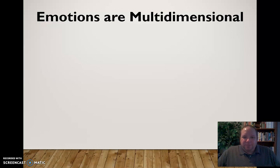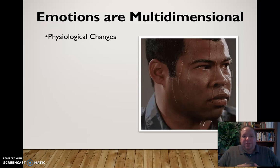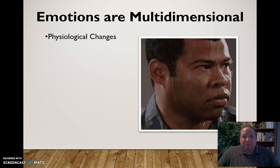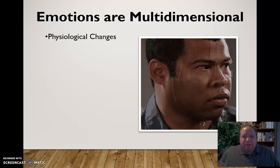As mentioned, emotions are multidimensional — they affect us in a variety of ways and we express them in a variety of ways. First, emotions are physiological; they involve physiological changes. When we experience an emotion, we may experience an increase in sweating, an increase in body temperature, an increase in heart rate, dry mouth, and other things that affect our body. So emotions can bring on these physiological changes.